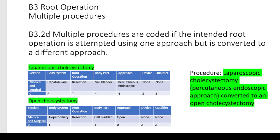Guideline B3.2D says multiple procedures are coded if the intended root operation is attempted using one approach but is converted to a different approach. Example: laparoscopic cholecystectomy converted to an open cholecystectomy. Laparoscopic implies a percutaneous endoscopic approach — make yourself a note in your codebook: laparoscopic equals percutaneous endoscopic approach. When coding a cholecystectomy, the root operation is the same — it's resection for both — but the approach is different. The approach for the laparoscopic is percutaneous endoscopic; the approach for the open cholecystectomy is open, requiring two codes. It's a single OR visit, but two different procedures were done.